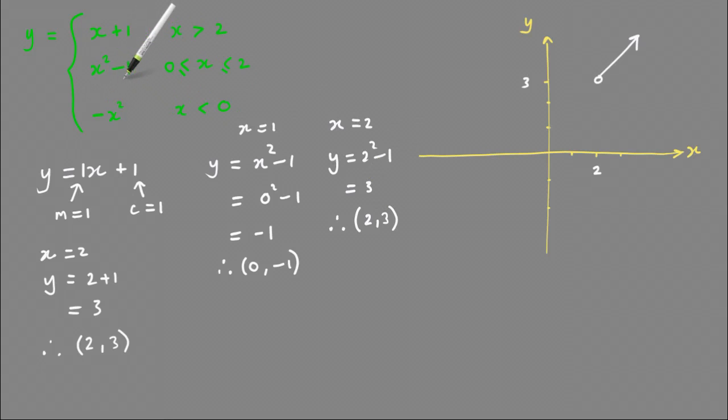A key thing to note here is that y equals x squared minus 1 is your basic x squared parabola moved down 1 unit. The turning point for y equals x squared is 0, 0, and when you move it down 1, it becomes 0, minus 1.